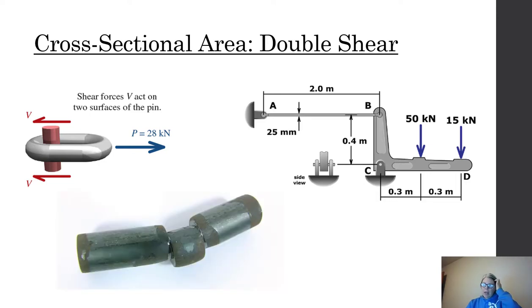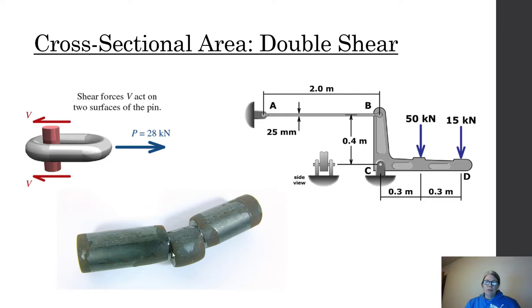A double shear failure would result in three parts because you have two sets of area that must be cut through in order for failure to occur.